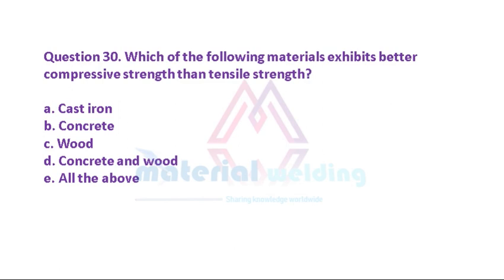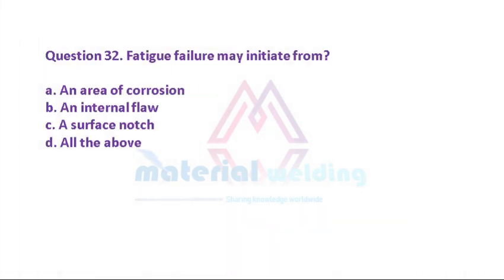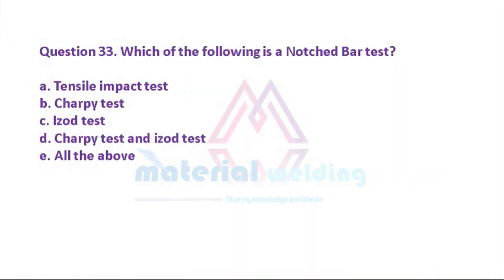Question 30: Which of the following materials exhibits better compressive strength than tensile strength? A. Cast iron. B. Concrete. C. Wood. D. Concrete and wood. E. All the above. Question 31: When a metal is very brittle, which test is used to replace the tensile test? A. The shear test. B. The transverse rupture test. C. The compression test. D. The endurance test. Question 32: Fatigue failure may initiate from: A. An area of corrosion. B. An internal flaw. C. A surface notch. D. All the above.